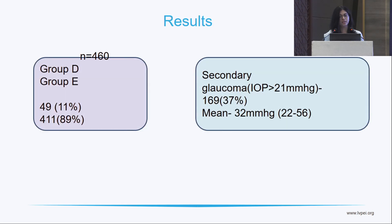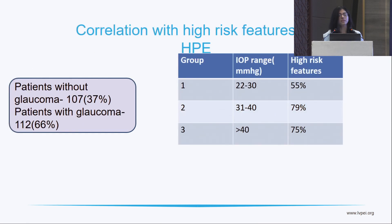Out of 460 eyes, 169 patients had secondary glaucoma with a mean IOP of 32 mmHg. Only 37% of patients without glaucoma showed high-risk histopathology features, whereas 66% of patients with glaucoma had high-risk features. In the IOP range between 22 to 30, 55% had high-risk features; between 31 to 40, 79%; and more than 40, 75% had high-risk features. This shows that the risk keeps on increasing as the IOP range increases.